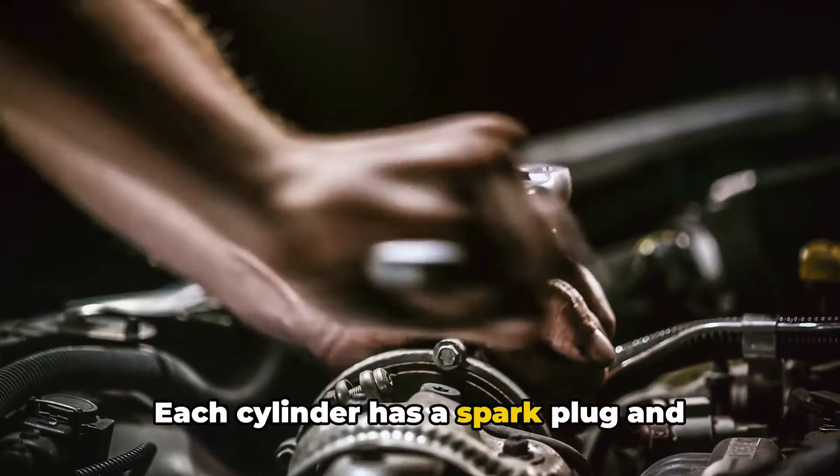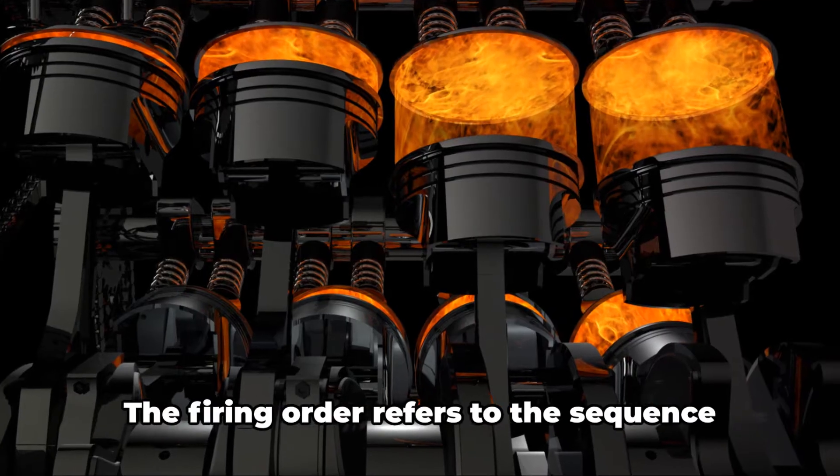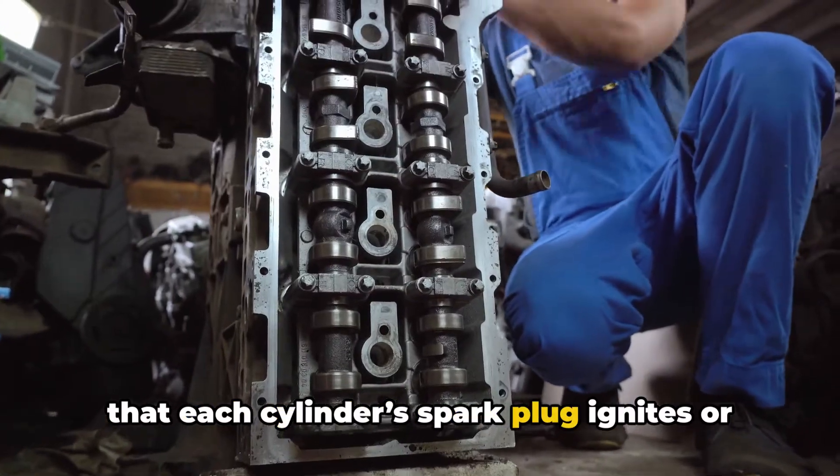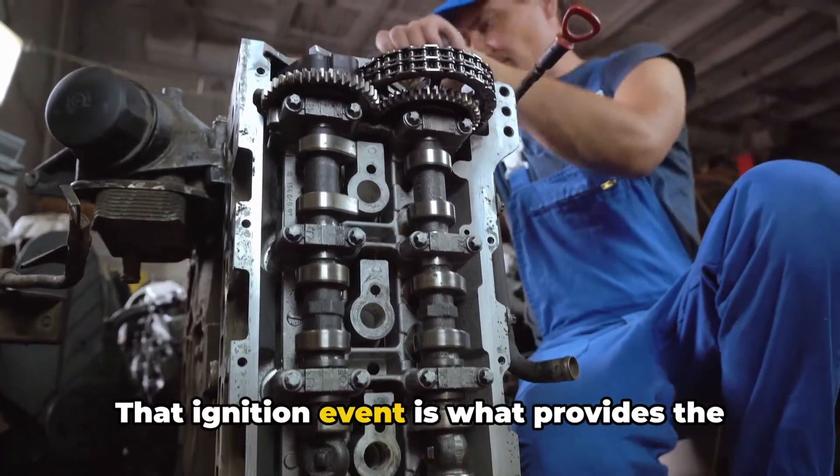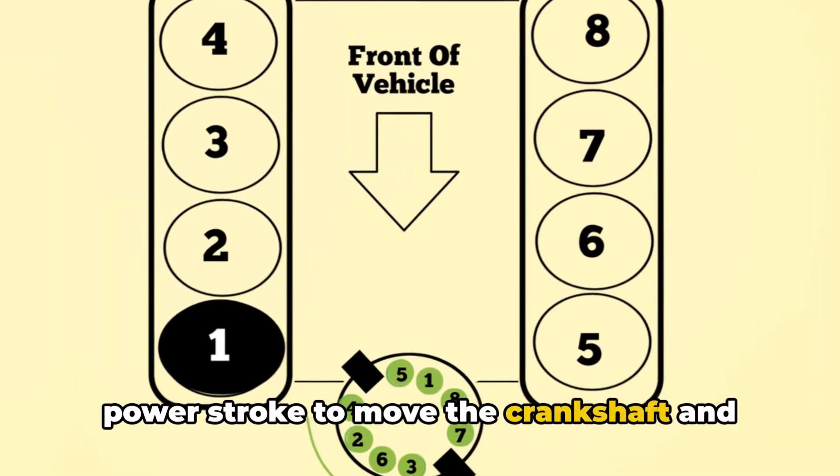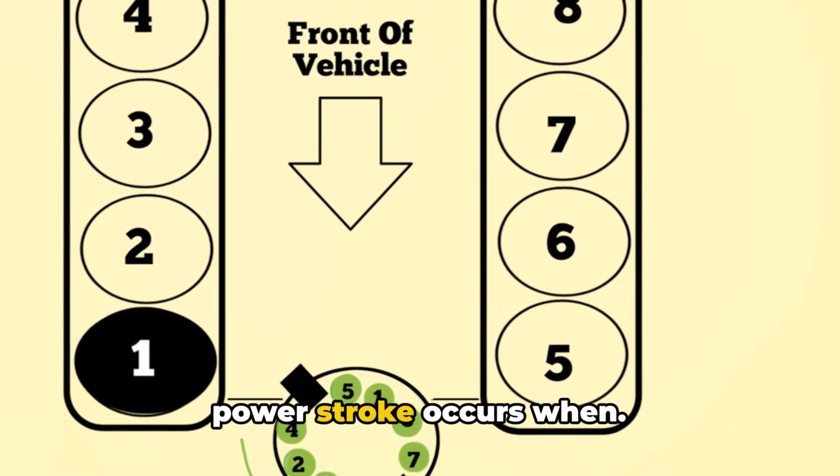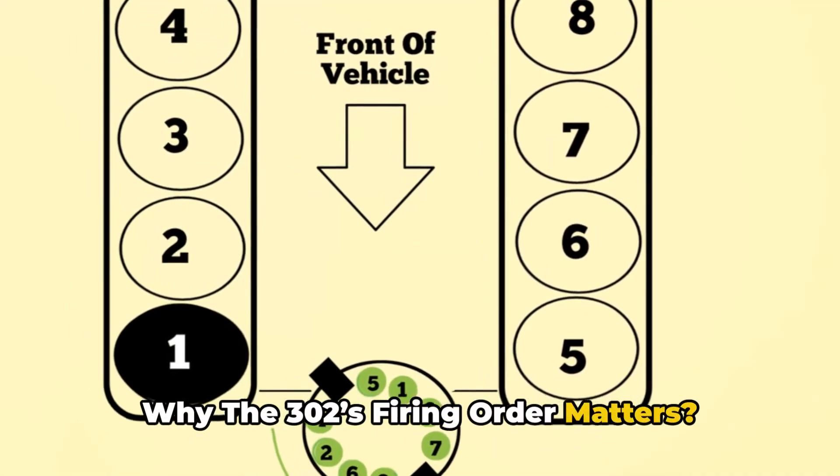Each cylinder has a spark plug and injector that supplies it with fuel and ignition. The firing order refers to the sequence that each cylinder's spark plug ignites or fires to burn its air-fuel mixture. That ignition event is what provides the power stroke to move the crankshaft and propel the vehicle. So the firing order determines which power stroke occurs when.